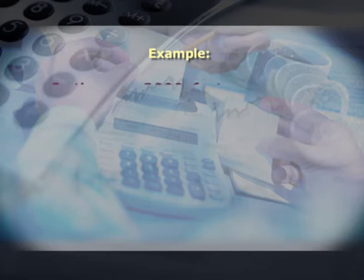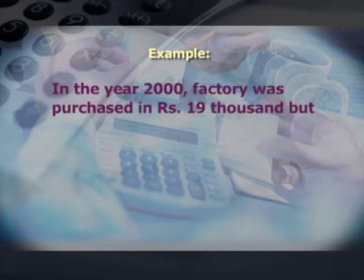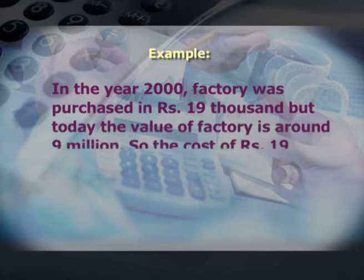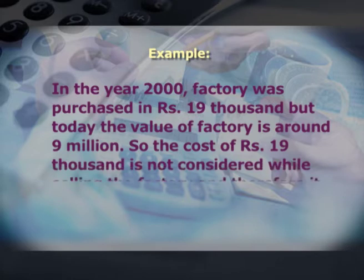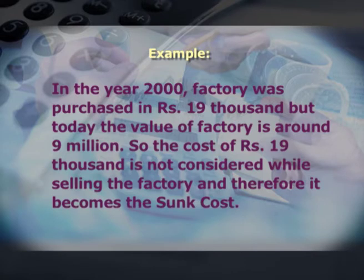Fifth is sunk cost. Sunk cost is the dead cost — a historical or past cost incurred in the past. It was considered relevant at the time the particular decision was taken, but in the present it is not relevant when taking decisions today. It remains in the list of relevant costs for decision making because analyzing past decisions and experience helps ensure current decisions are sound. For example, a factory purchased in year 2000 for rupees 19,000 may today be worth around 9 million. The original cost of rupees 19,000 is not considered while selling the factory today, and therefore becomes a sunk cost.